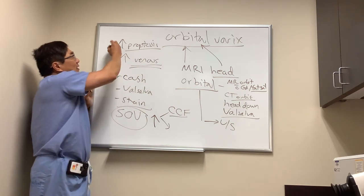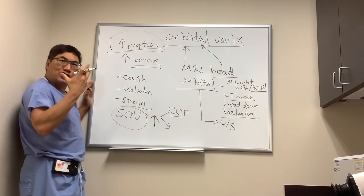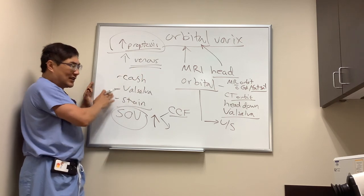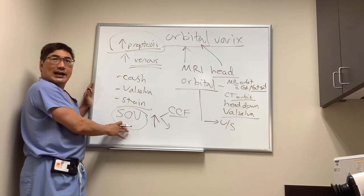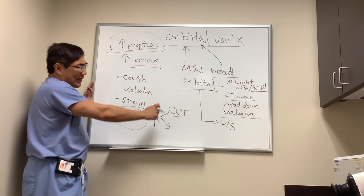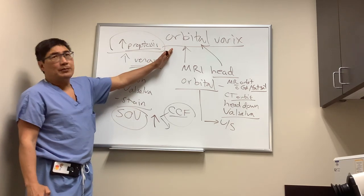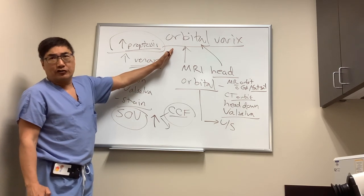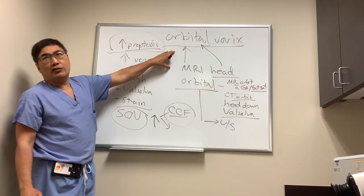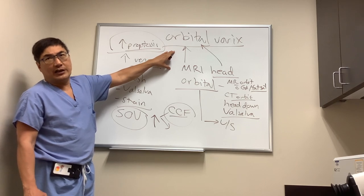In summary, orbital varices have distinctive symptoms: visual symptoms including vision loss and double vision, proptosis, and a pressure sensation created by increased venous return driven by cough, Valsalva, or strain. On imaging — orbital MRI, CT, or ultrasound — we look for dilation of the vein. Carotid-cavernous fistula must be ruled out. If it does turn out to be a varix, it's normally benign and we don't treat it — just avoid whatever is causing the increase in venous pressure. However, if it's symptomatic, ruptures, or has an arterial component, endovascular treatment and other therapies can be given.